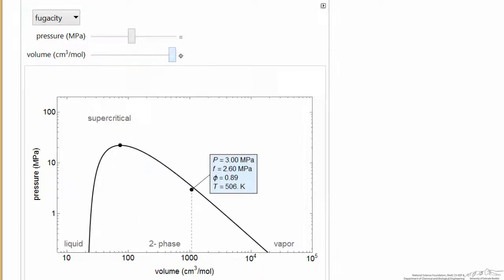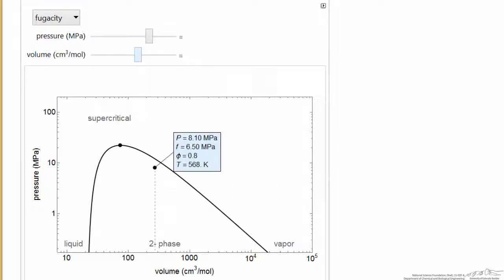Now, if I increase the volume enough to go into the one-phase region, notice what happens. I'm at higher temperature for this pressure, and the fugacity coefficient went up. The fugacity is closer to the pressure. And then, of course, if I lower the pressure, I can go back into that region. But let's look at high pressure back into